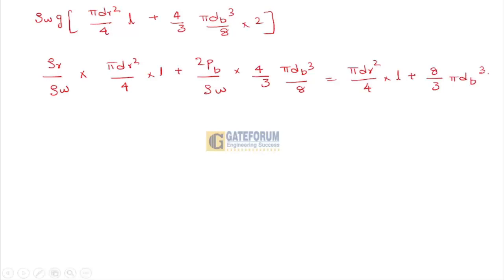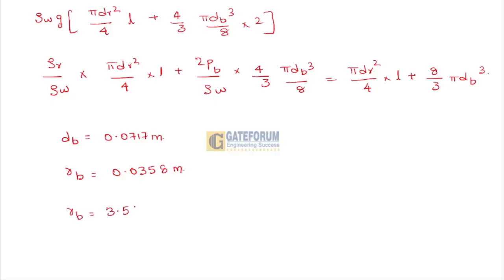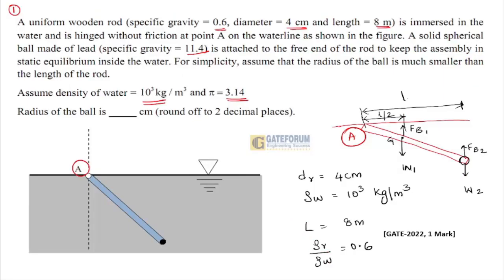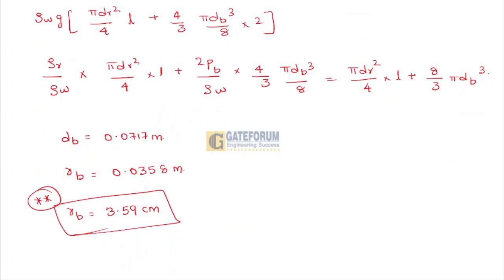With all values substituted, find d_b cube from the equation. The value of d_b comes out to 0.0717 meters, so the radius is 0.0358 meters, or approximately 3.59 centimeters. He is asking up to 2 decimal places, so 3.59 centimeters is the right answer for the given question.